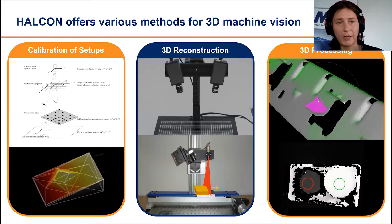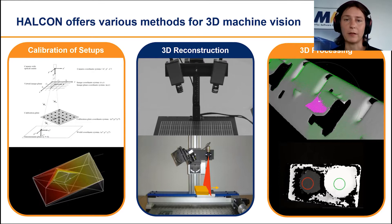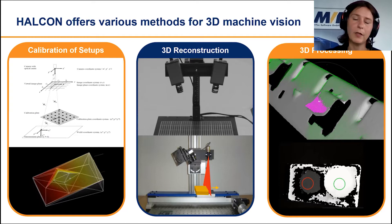Halcon also has large flexibility in 3D. The 3D module covers different aspects. First, it covers all the functionalities to calibrate different kinds of setups, such as single camera calibration, multi-camera calibration, sheet of light settings, and so on. You can also reconstruct point clouds based on the calibration information. And finally, there's 3D processing, which includes 3D metrology, object localization, preprocessing, and processing of different kinds of point clouds.